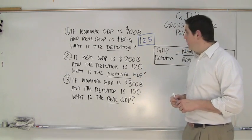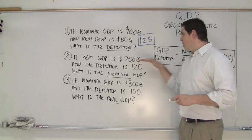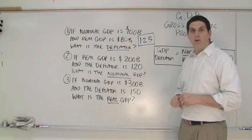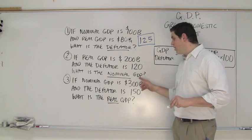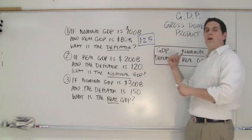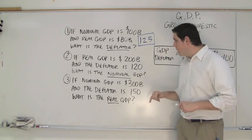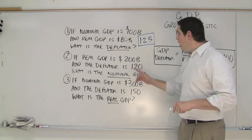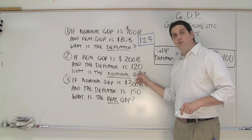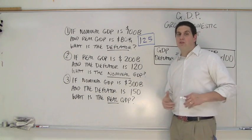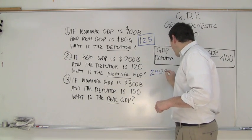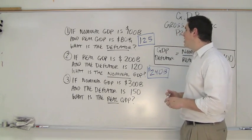Now you're looking for the nominal GDP. The real GDP in a given year is $200 billion and the deflator is 120, so prices have gone up 20%. The question is: how much is the nominal? First question you have to ask is whether the nominal GDP is going to be higher or lower than $200 billion. Logically, without the equation — is the number greater or less than $200? Well, $200 billion is the real GDP and prices have gone up 20%, so the nominal is going to be greater than $200 billion.